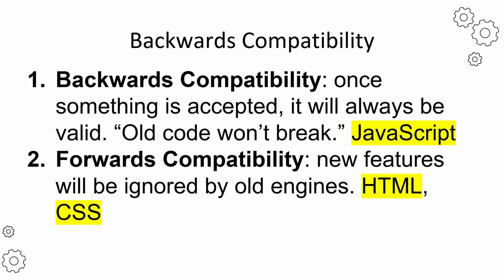JavaScript is backwards compatible. That means updates of the language won't break old code. It's safe to use old code or libraries in your program. HTML and CSS are forwards compatible, which means new features will be ignored by old engines. As a result, your program with new features can still run in old engines, just without the new features being visible. That's why old Internet Explorer can open modern websites, but something might be missing on the site.